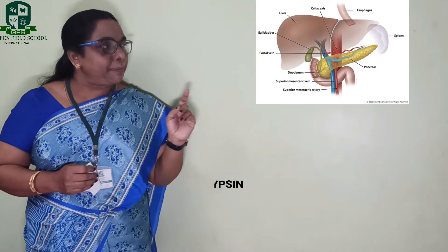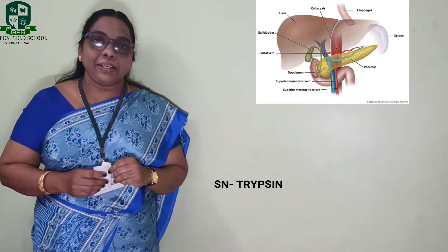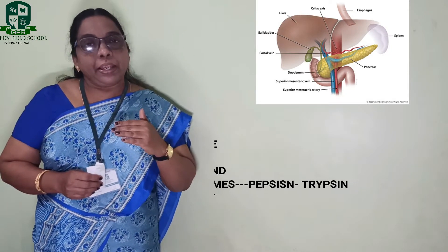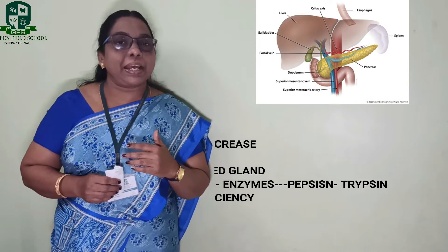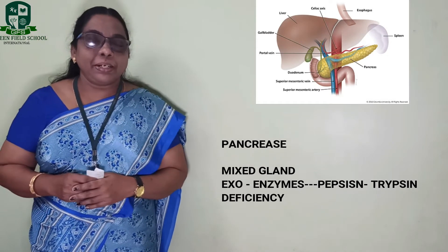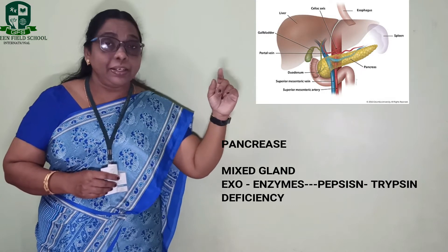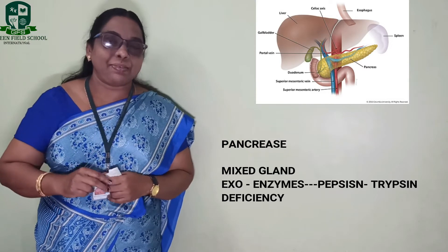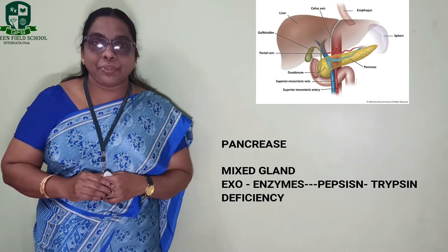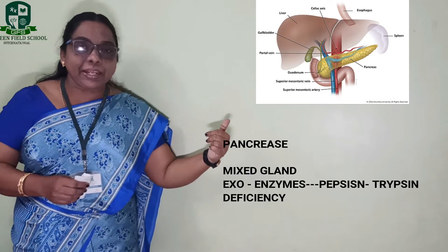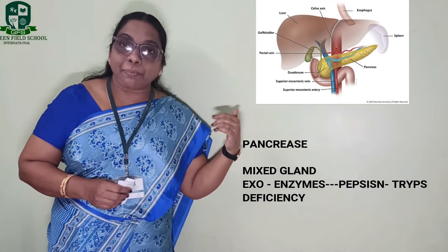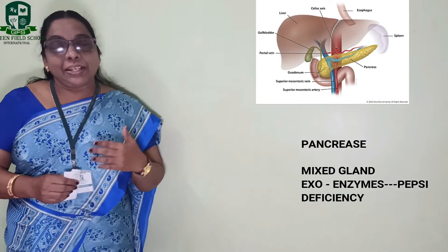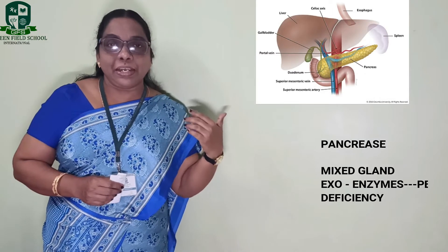The next gland is the pancreas. Look at this picture — the pancreas is present below the duodenum. These two glands — the liver and pancreas — can also be called digestive glands. Above the duodenum there is the liver, and below the duodenum there is the pancreas. This pancreatic gland produces digestive enzymes, and in the same way it also releases hormones.